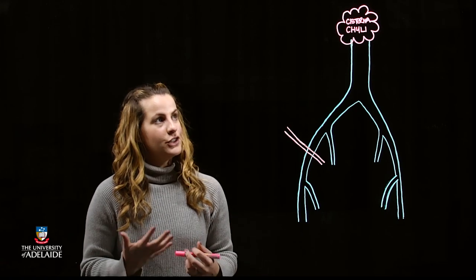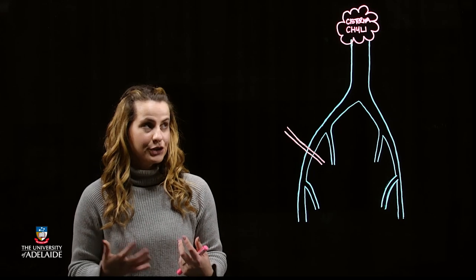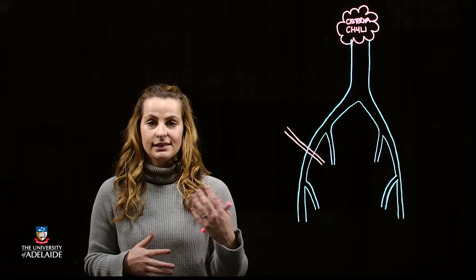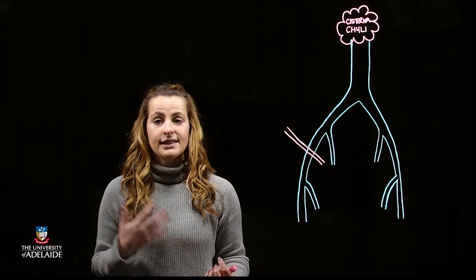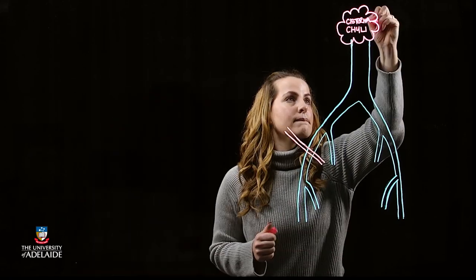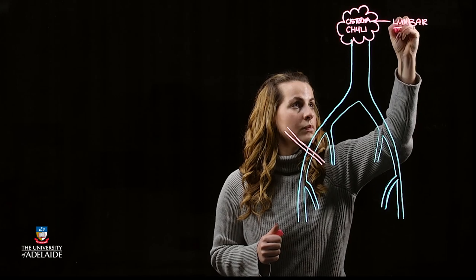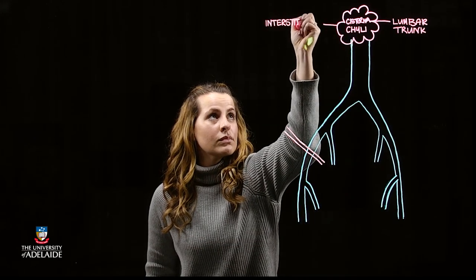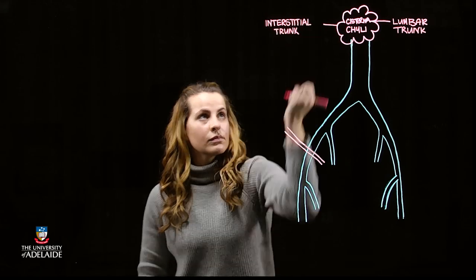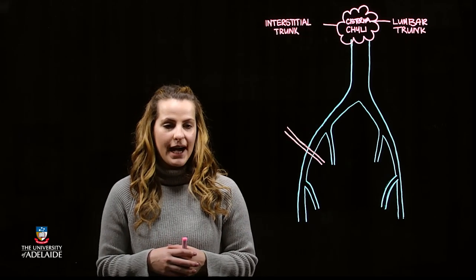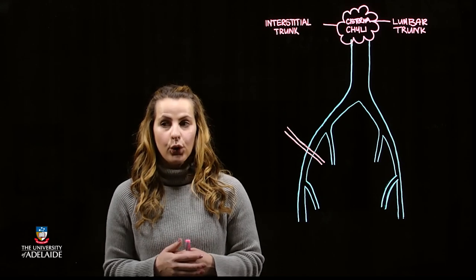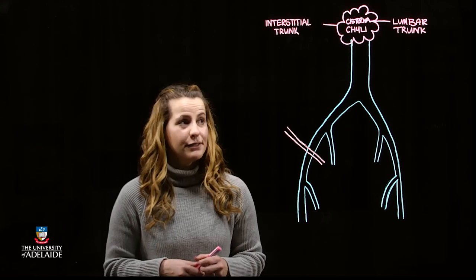The significance of the cisterna chyli is that it receives contributions from two main trunks: namely the interstitial trunk and the lumbar trunk. The lumbar trunk is formed by a group of lymph nodes called the lateral, or also called the para-aortic, lymph nodes.